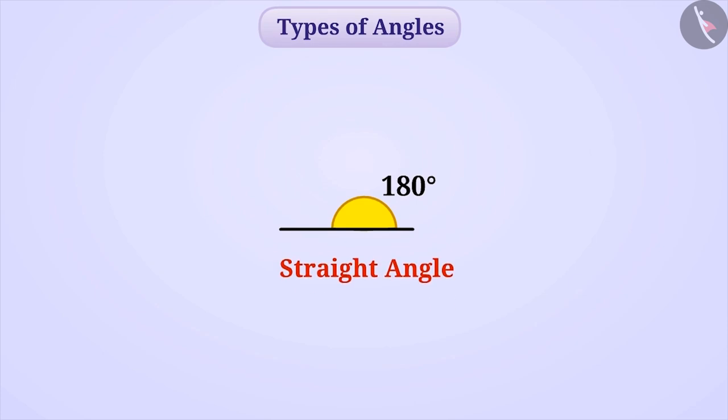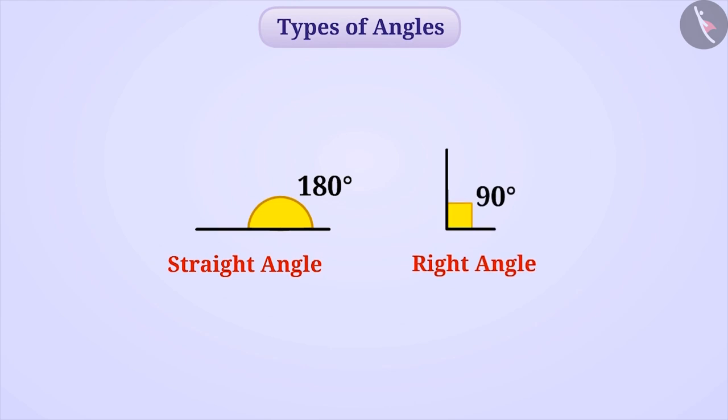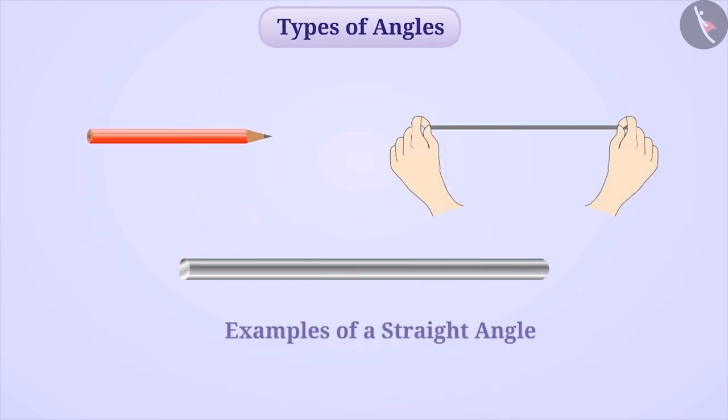Such an angle is called a straight angle. Can we establish a connection between straight angle and right angle? Try. You are absolutely correct. One straight angle is double that of a right angle. We see a straight angle in many situations.